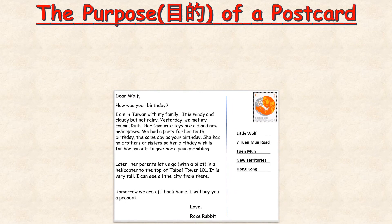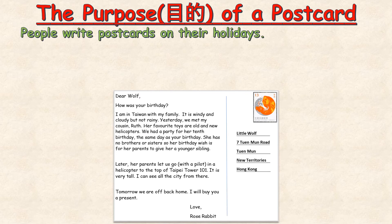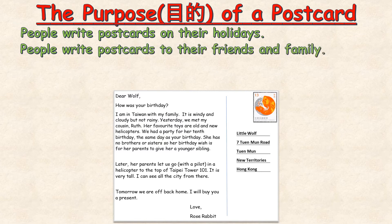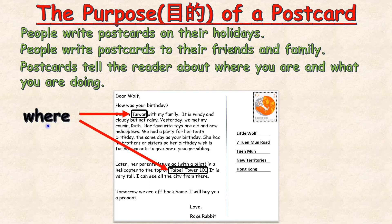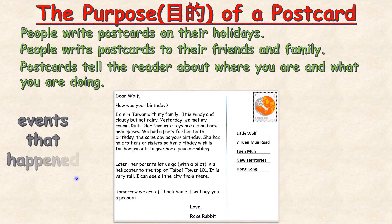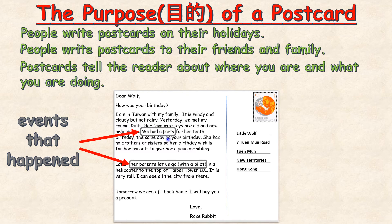The purpose of a postcard: people write postcards on their holidays to their friends and family. Postcards tell the reader about where you are and what you are doing. In Rabbit's postcard, there are examples of where she goes — the holiday is to Taiwan, so Rabbit writes about that. When they are in Taiwan, she also goes to Taipei Tower 101. There are also events that happened: Rabbit writes about the birthday party for her cousin, and about going in a helicopter with a pilot and her cousin to the tower.